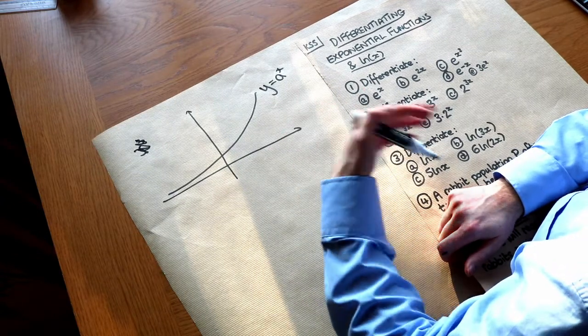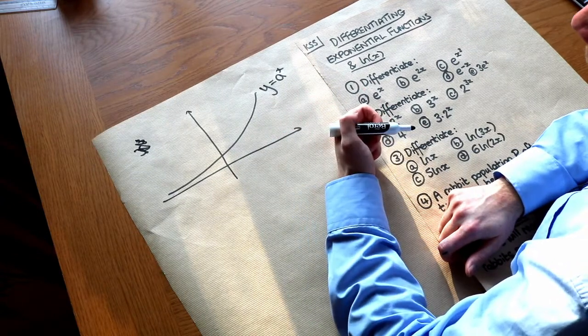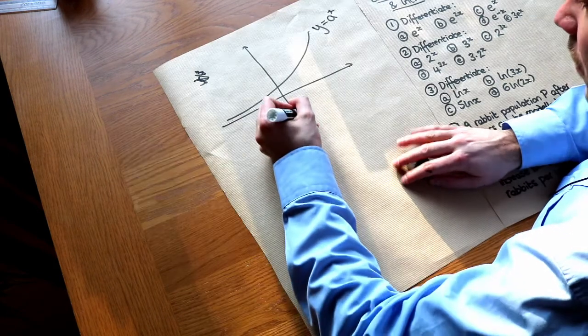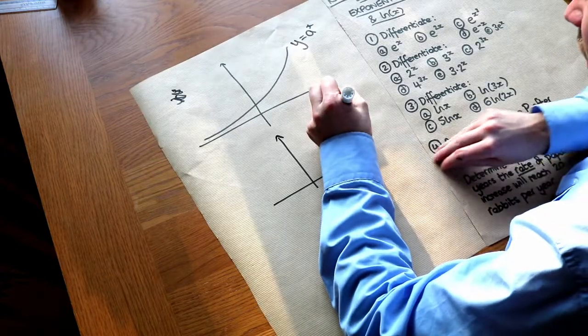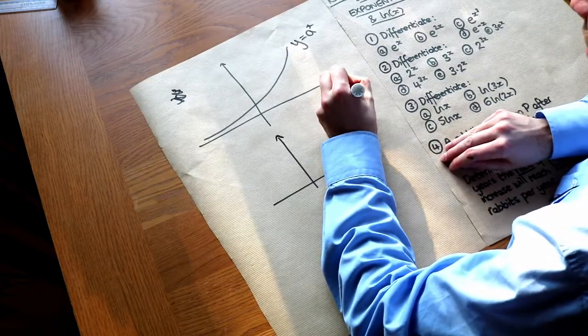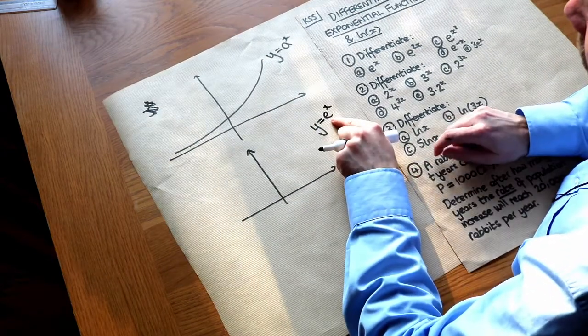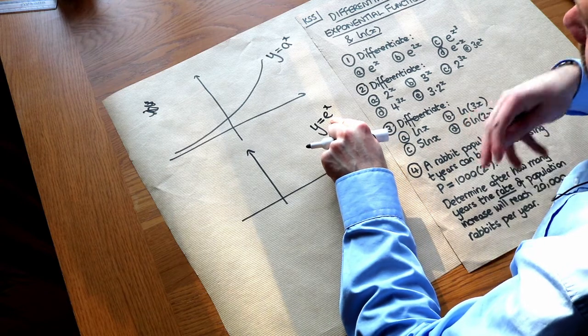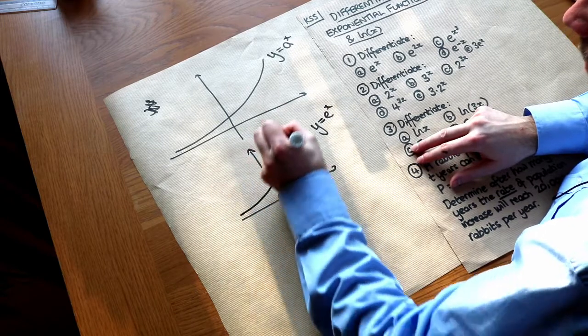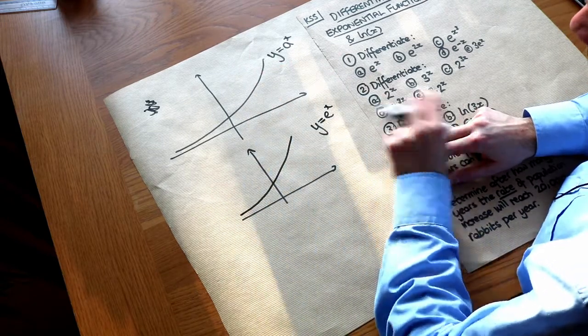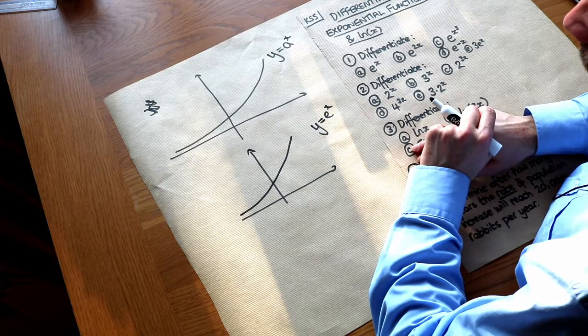If you haven't done the natural log yet then I advise that you watch the videos on that first. Now hopefully you're already familiar with y equals e to x. That is the exponential function and remember e is just a special constant, its value is 2.71 to two decimal places. It's known as Euler's number and it's just still just a bog standard exponential graph because it's some constant to the power of x.